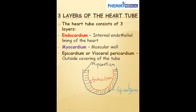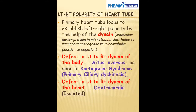The inner part receives the least amount of oxygen or the least amount of blood flow, and that's why the inner part is more prone to ischemia, like endocardial ischemia, which we want to talk about when we get to pathology.